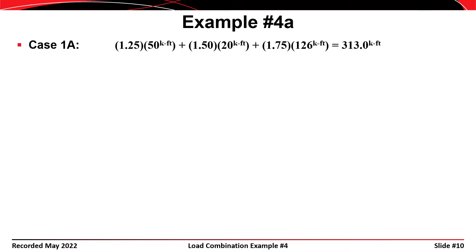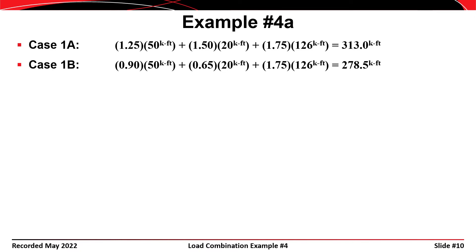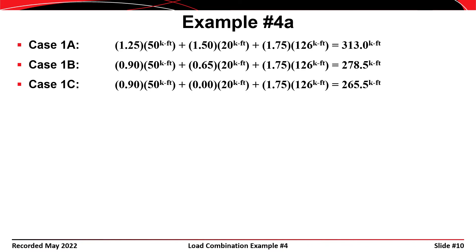For load case 1 with maximum load factors: 1.25 × DC + 1.5 × DW + 1.75 × (LL+IM) gives 313 kip-feet. With minimum load factors: 0.9 × DC + 0.65 × DW + 1.75 × (LL+IM) gives 279 kip-feet. Using minimum DC and zero DW factors gives 266 kip-feet. Since all three are positive, case 1A with 313 kip-feet is the critical value; cases 1B and 1C need not be considered.